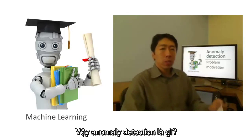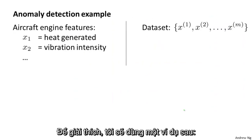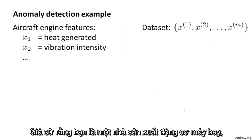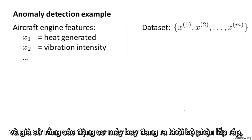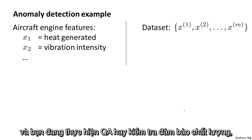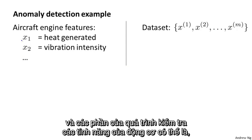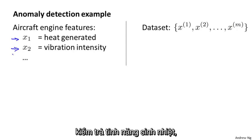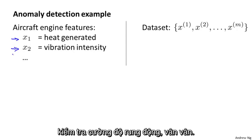So what is anomaly detection? To explain it, let me use the motivating example of imagine that you're a manufacturer of aircraft engines. And let's say that as your aircraft engines roll off the assembly line, you're doing QA, quality assurance testing. And as part of that testing, you measure features of your aircraft engine, like maybe you measure the heat generated, things of the vibrations and so on.